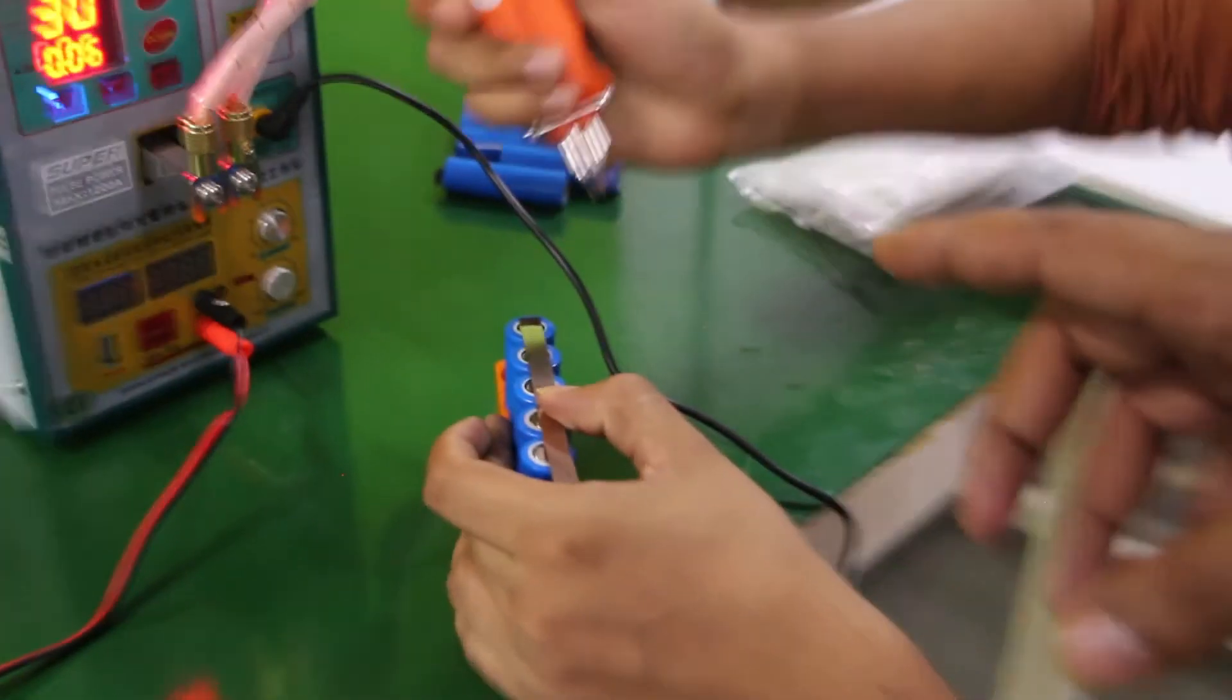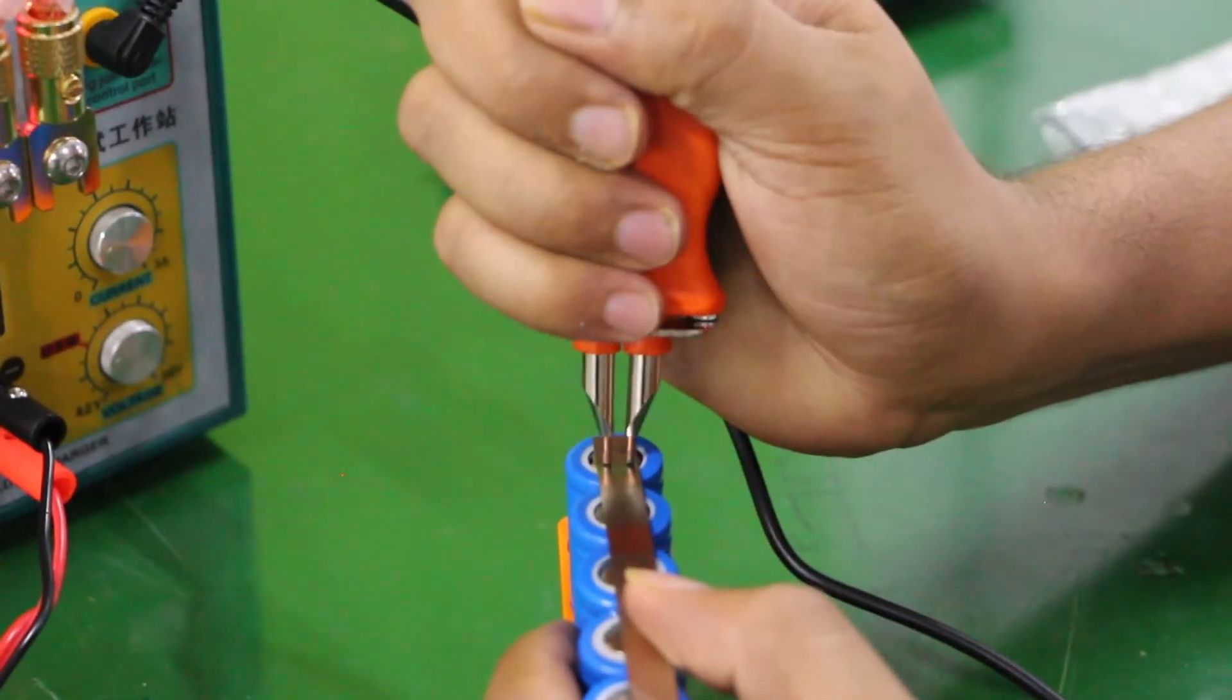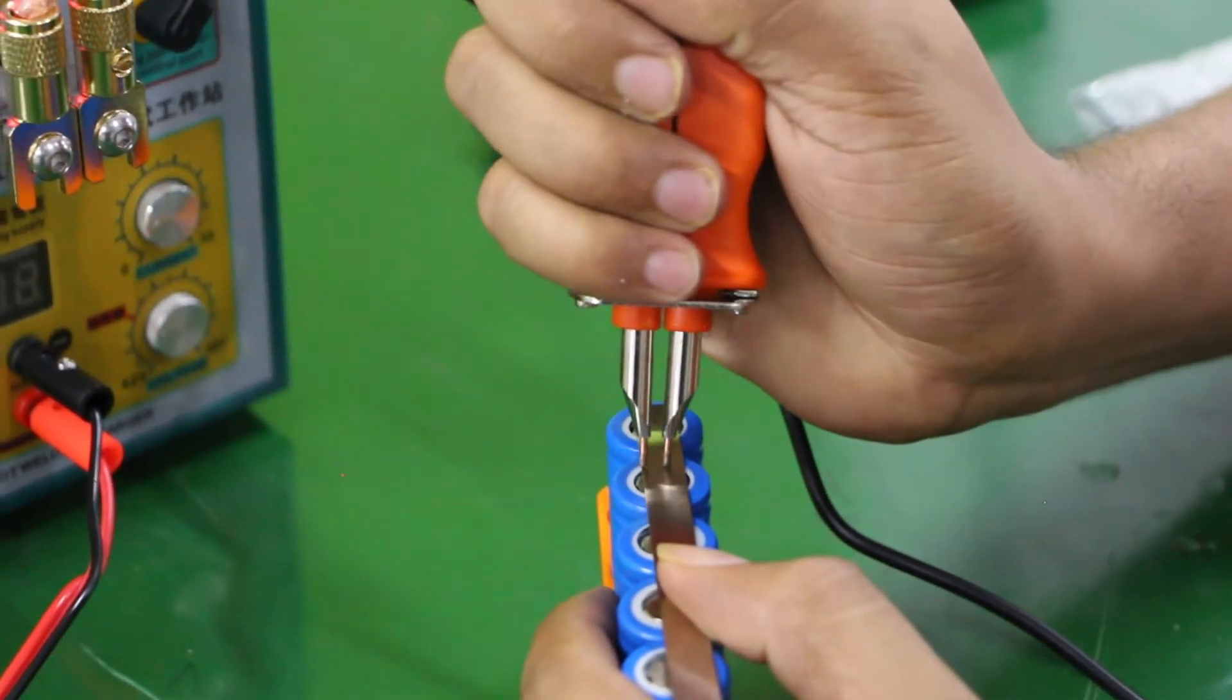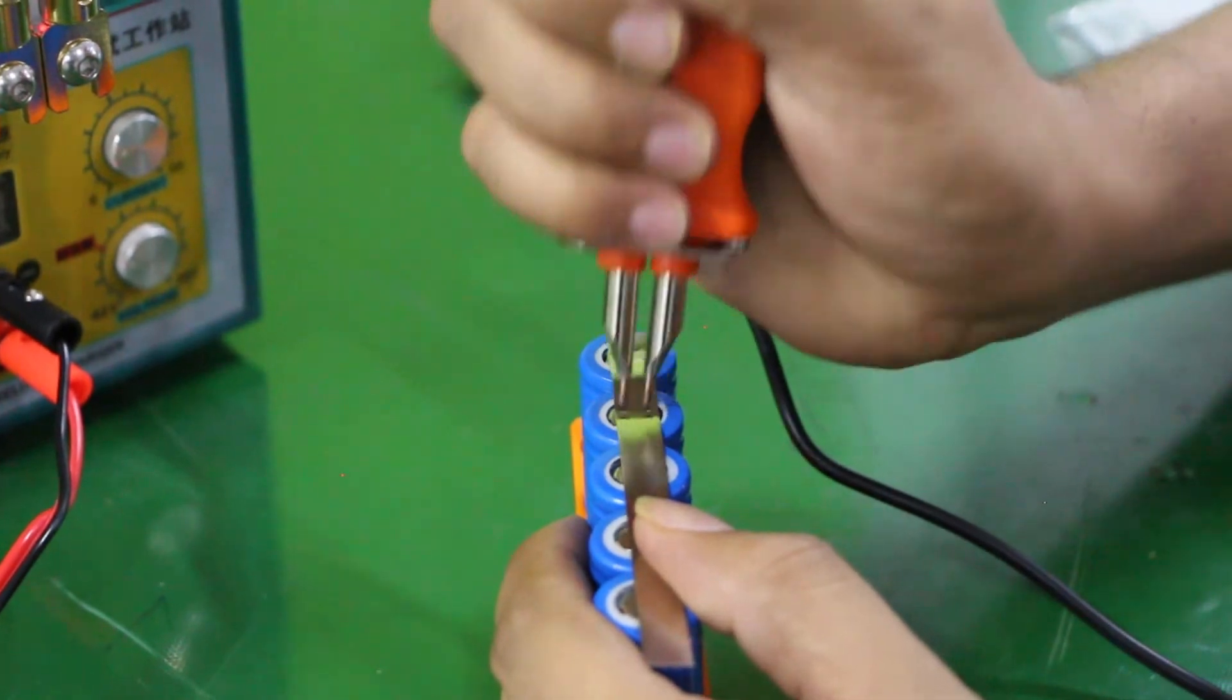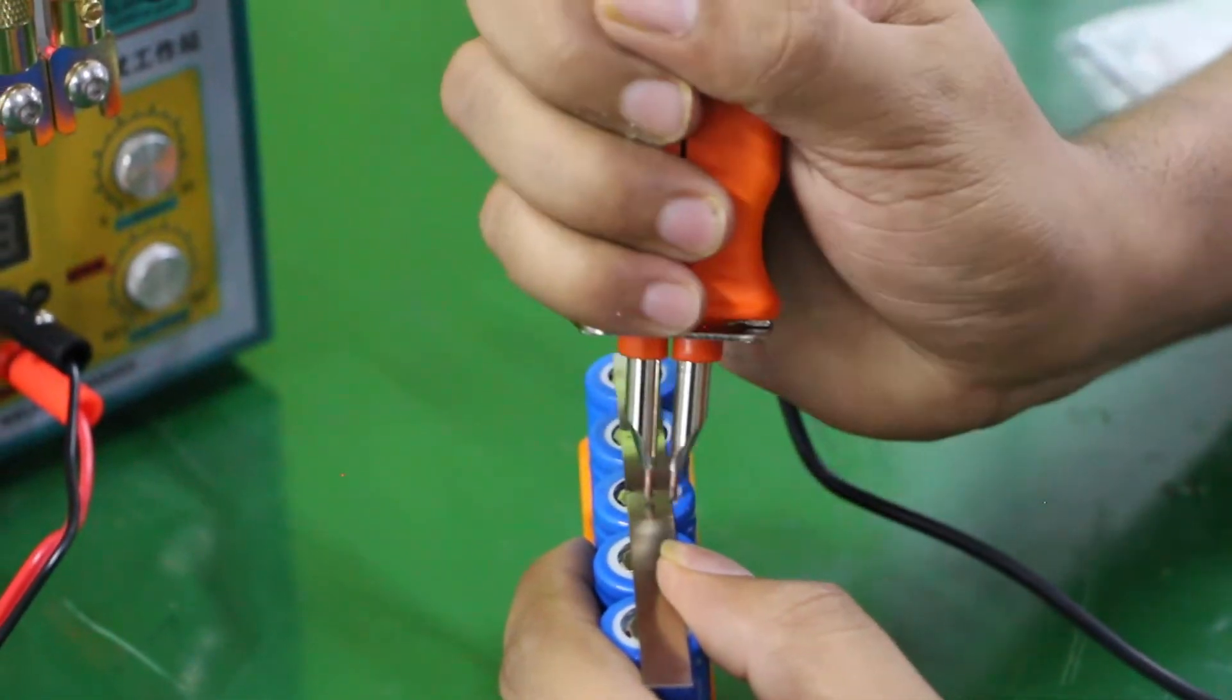Now we can see how we do the welding. We just need to set the parameters, place it on the battery, and press the handle. It will weld very well.